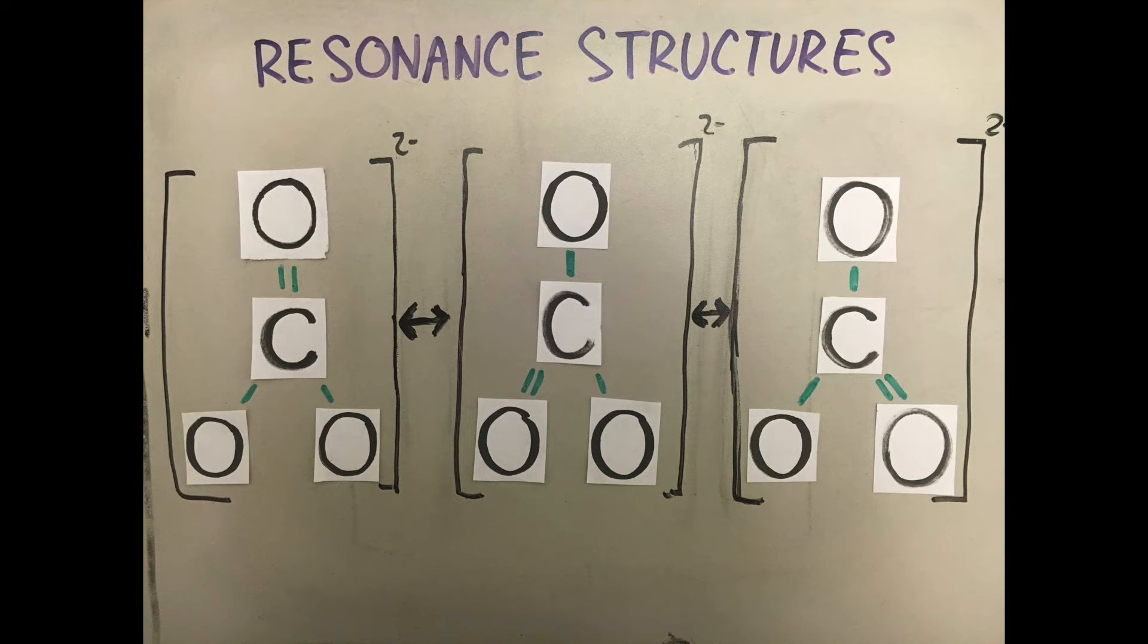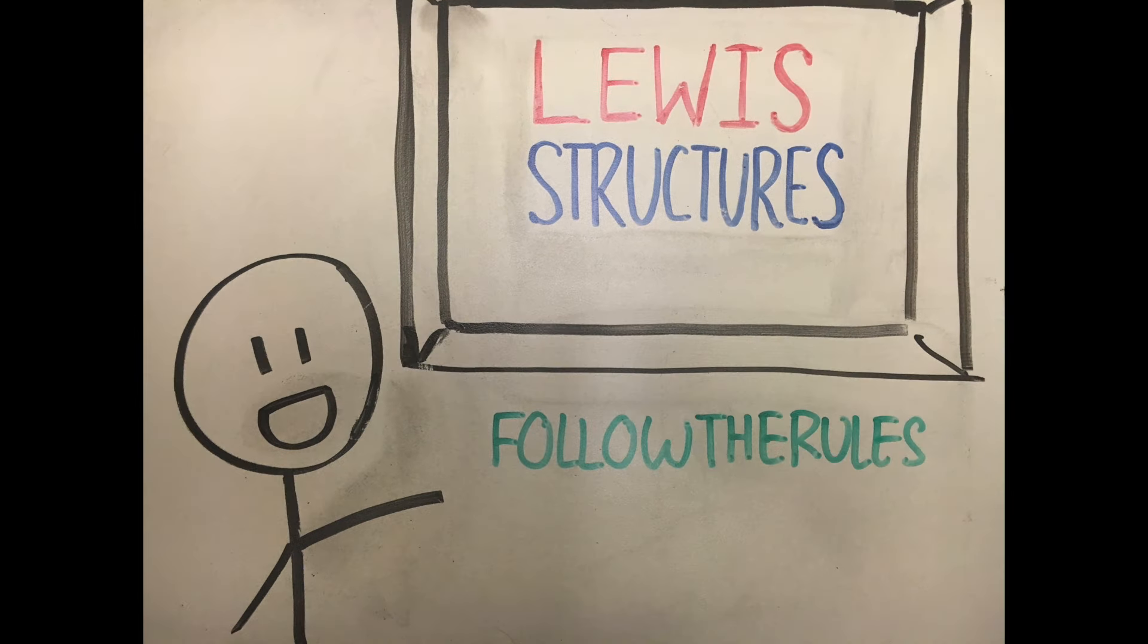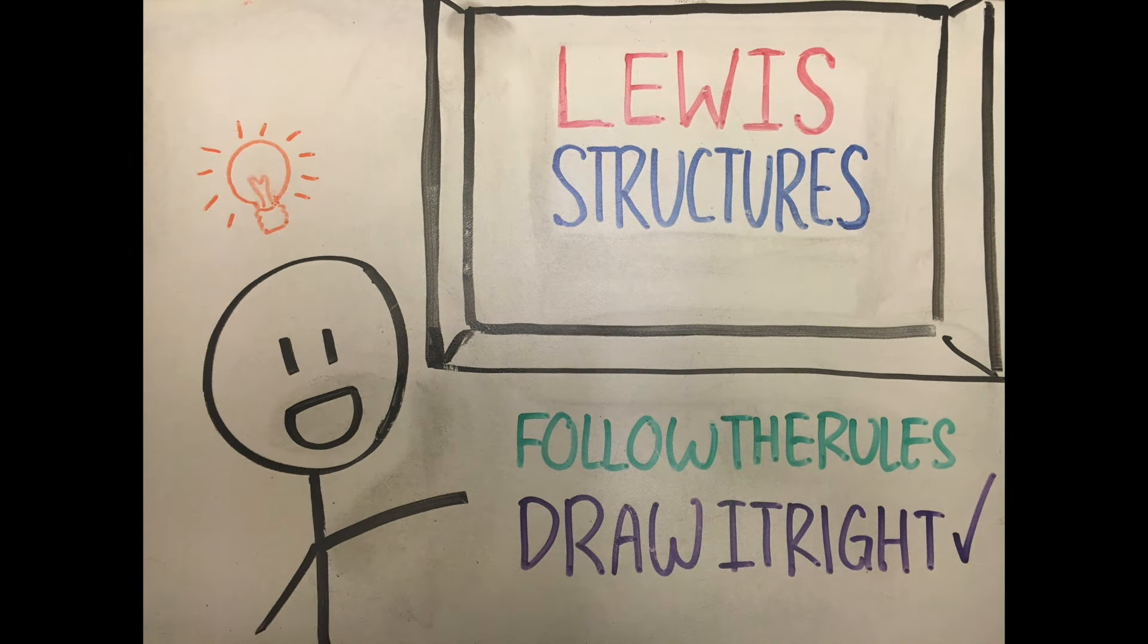If you have triple bonds, then you do the same. Set them up like it's a big fat game. This, my friends, is how you draw the Lewis structures. There's a lot to absorb, very big picture. Follow the rules, draw it right, and you'll be so damn bright.